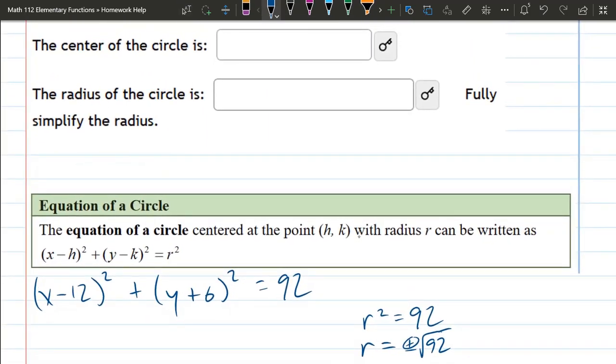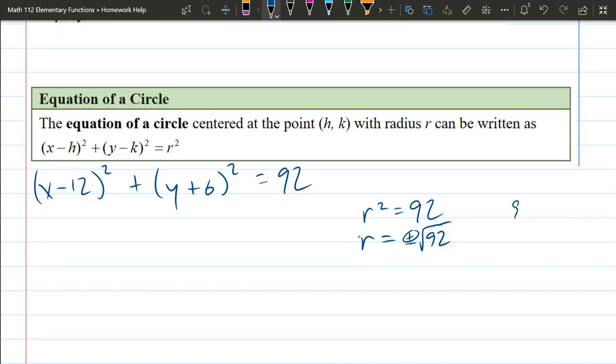This question asks us to fully simplify the radius. So we might be able to simplify square root 92. In order to do that, I'm going to write a factor tree. I know 92 is even, so it's 2 times 46. 46 is 2 times 23, and 23 is prime. So I could write 92 as 2² times 23.